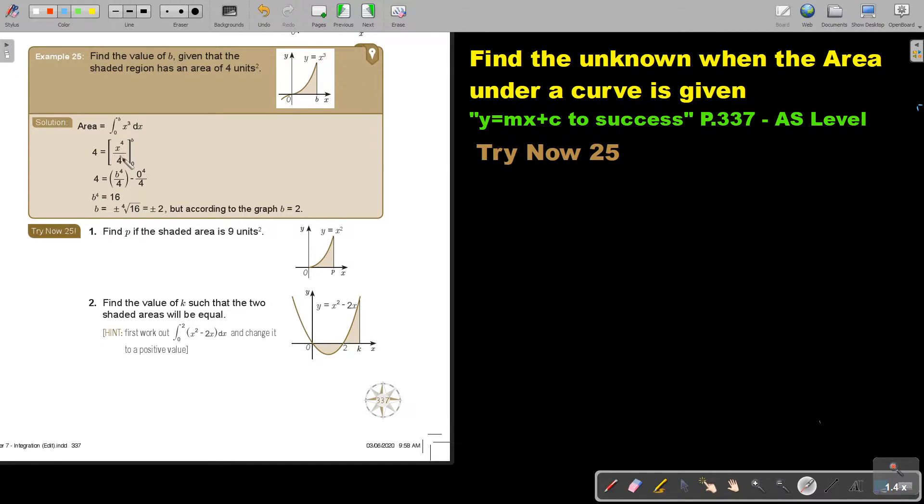Still integrate. So I add 1, I divide 4, B and 0. And then I substitute and then it's forming an equation. And if I take the fourth root, it's plus minus 2. But according to the graph, you can see it's on this side of 0, so it's positive 2. If it was on this side there, it would have been negative 2.